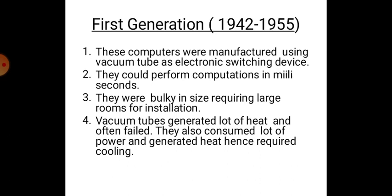First Generation: 1942 to 1955. There could be some overlap in the time periods — it makes no much difference as it is an approximate period. These computers were manufactured using vacuum tubes as electronic switching devices. Earlier diodes were vacuum tube diodes, just like bulbs having gas and a filament. They could perform computation in milliseconds.